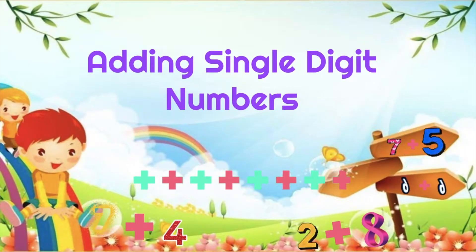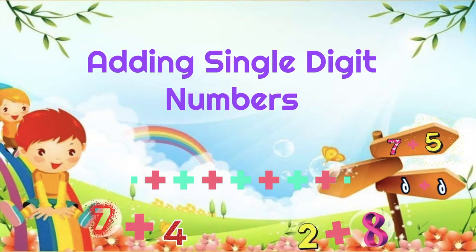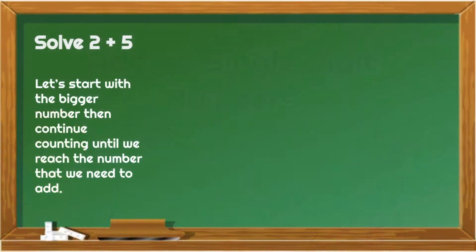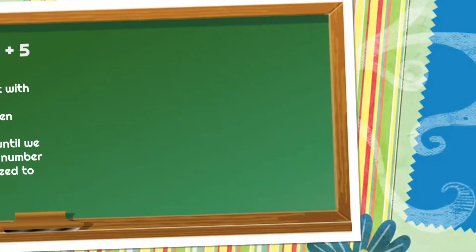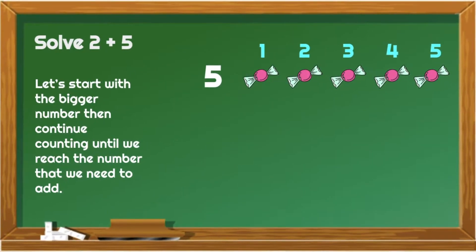Now, let's begin with adding single digit numbers. To begin with, let's add 2 and 5. It would be easier if we start with the larger number, then continue counting until we reach the number we need to add. So, for this example, let's start with 5.